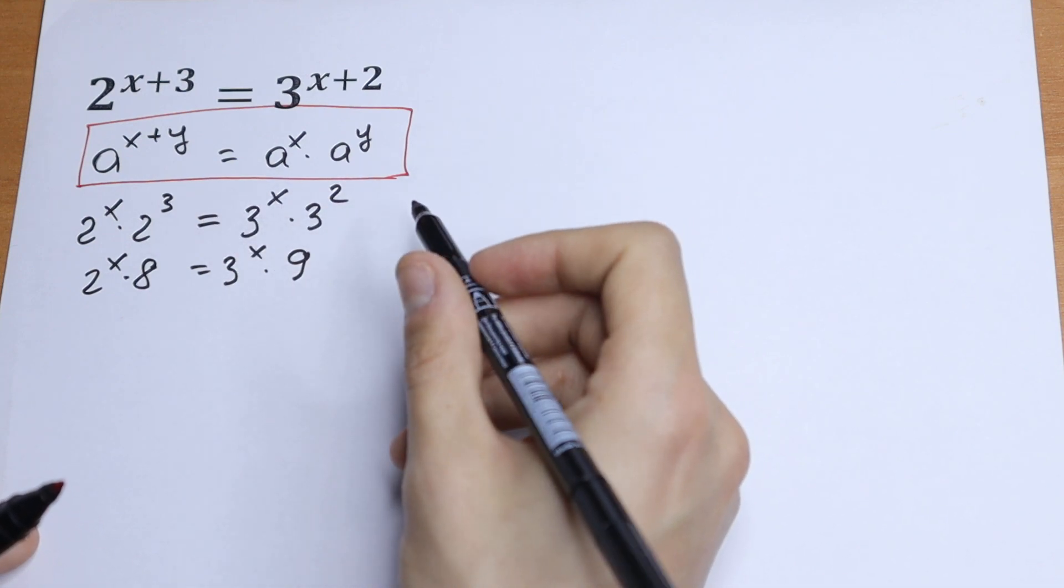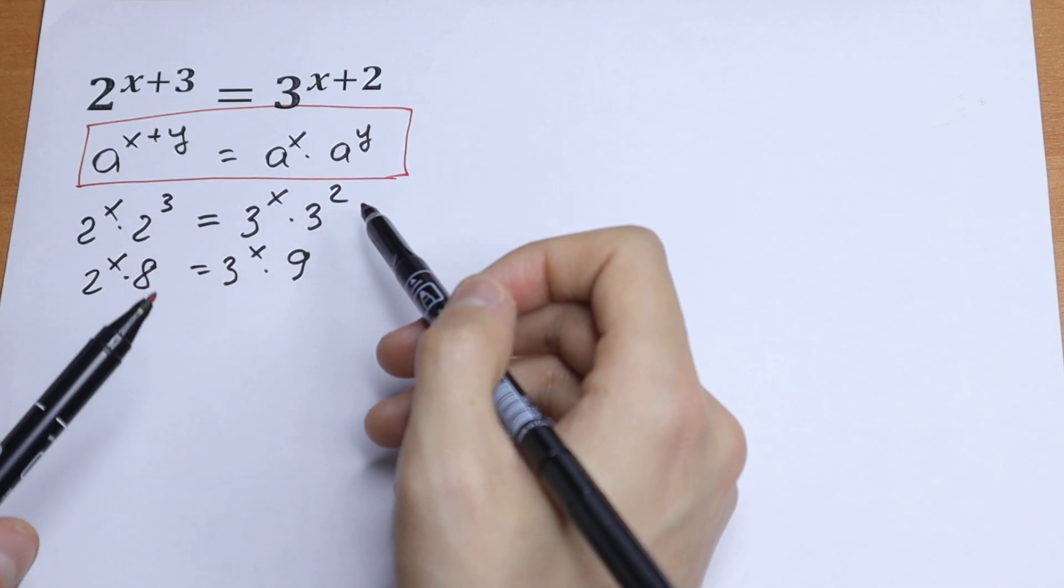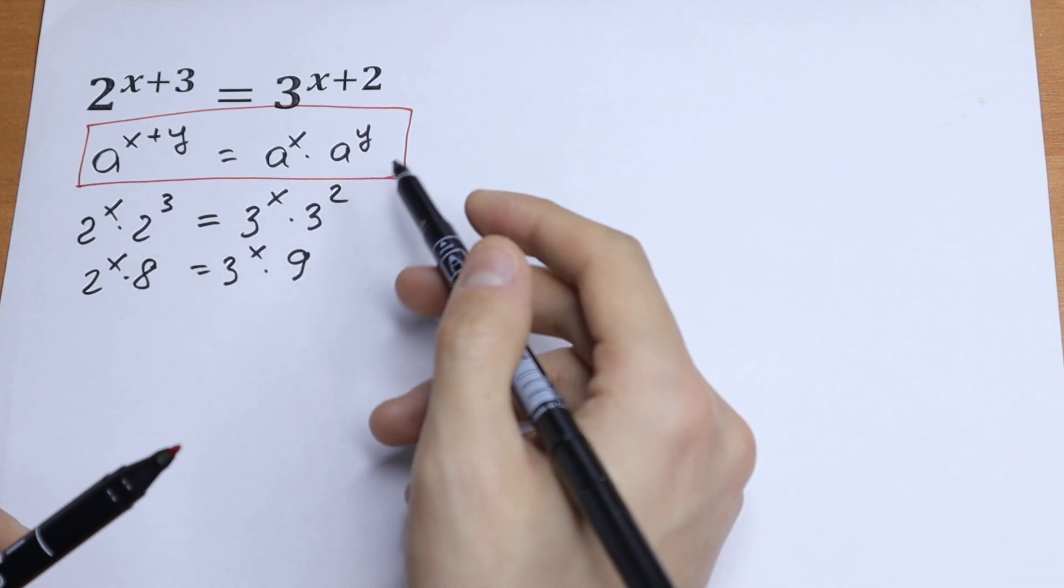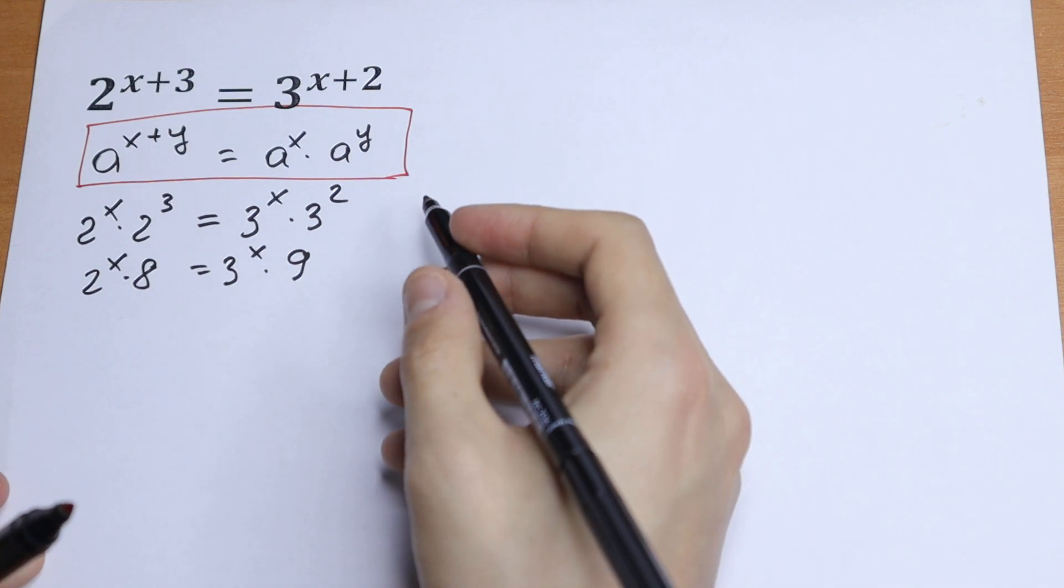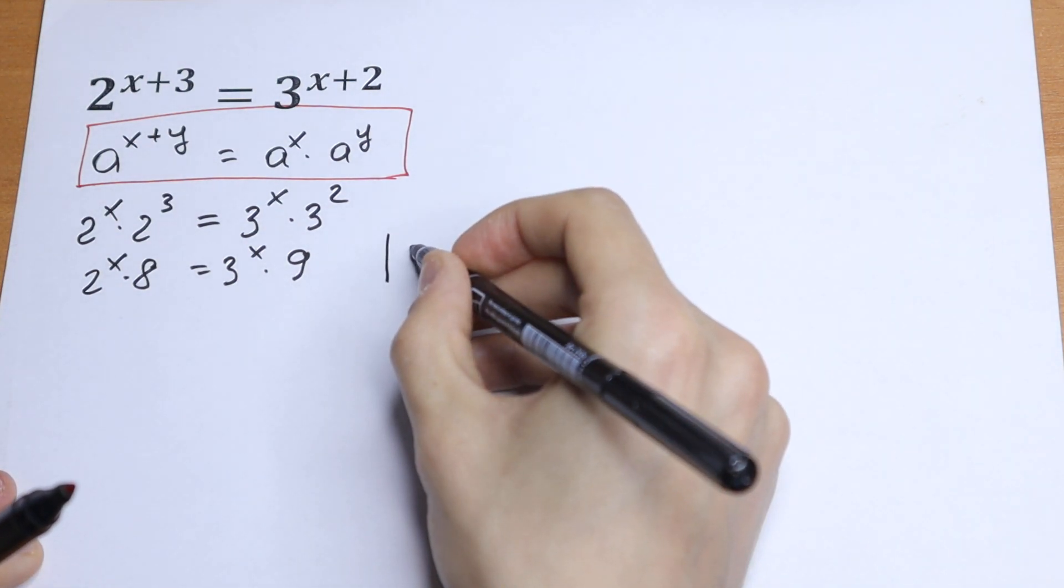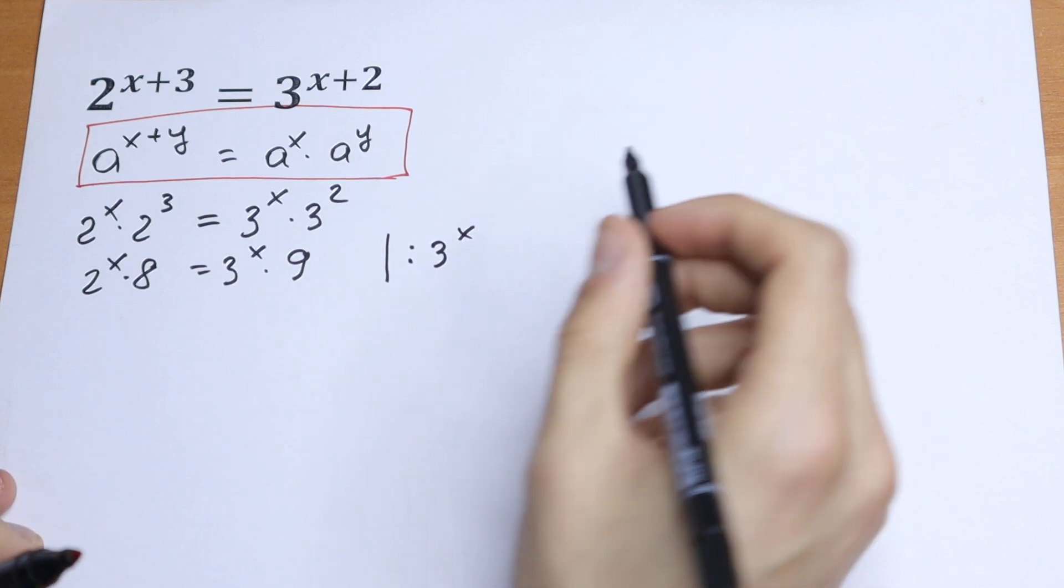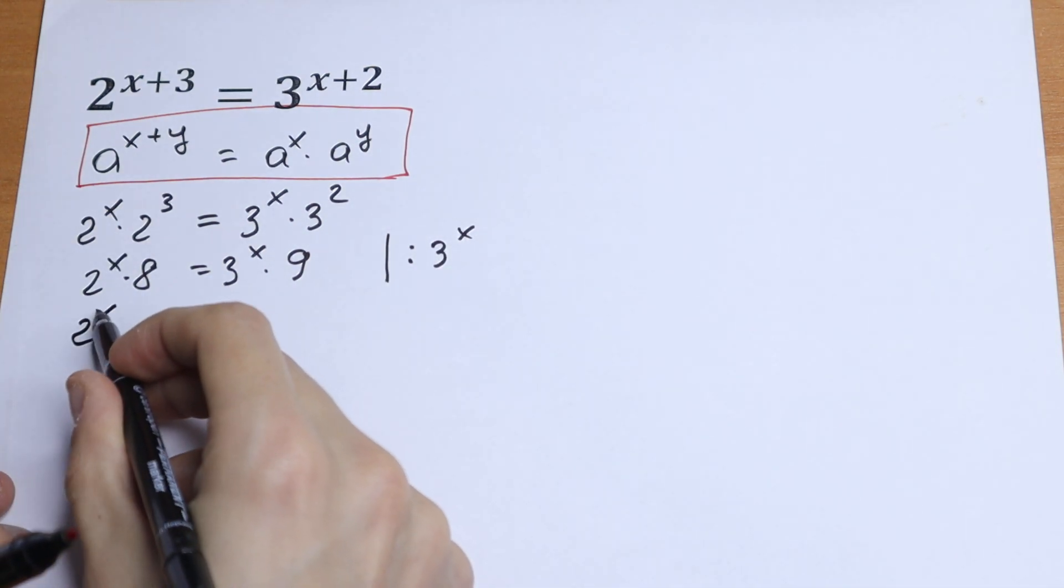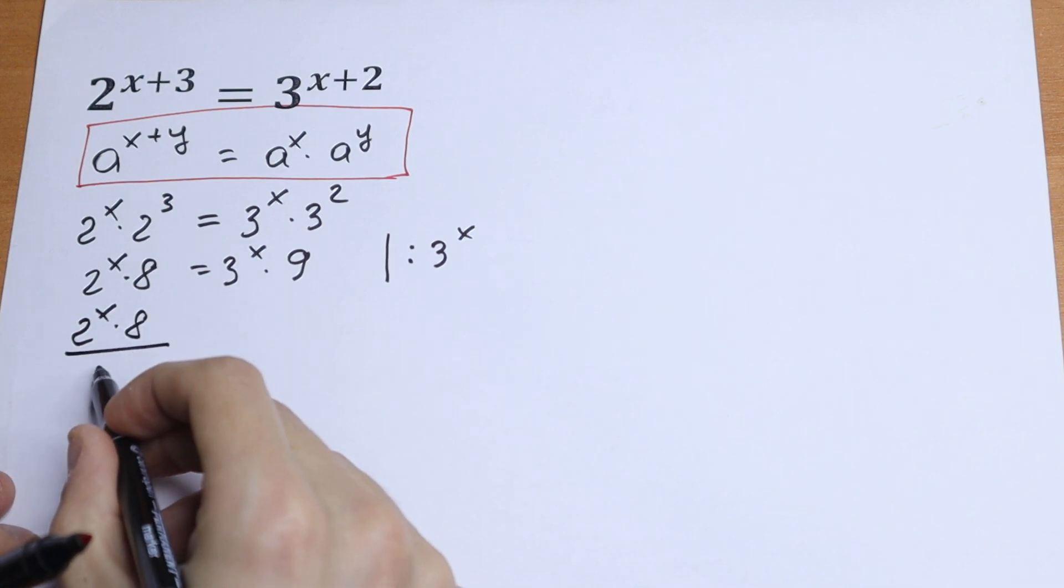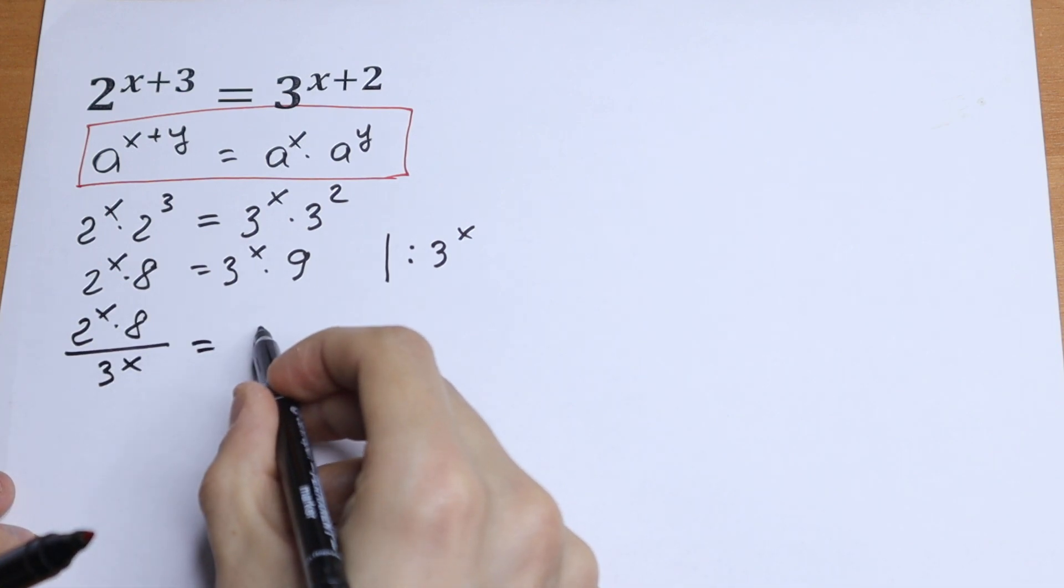We need our x's on the left and our values, our numbers, on the right. If we divide both sides by, for example, first 3 to the power x, we will have on the left 2 to the power x times 8 over 3 to the power x equal to 9.